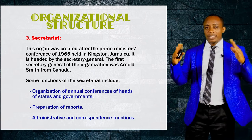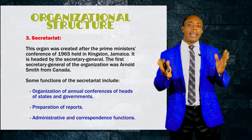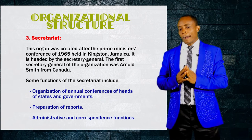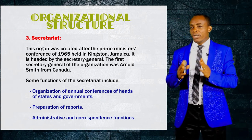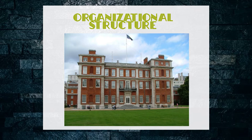Now let's talk about the secretariat. The secretariat is the third principal organ of the Commonwealth. This organ was created in the year 1965 in Kingston, Jamaica. It is headed by the secretary general of the organization, and the first secretary general of the Commonwealth was Arnold Smith from Canada. Some functions performed by the secretariat include organization of annual conferences of heads of states and governments, preparation of reports, as well as administrative and correspondence reports. The secretariat is located in London.